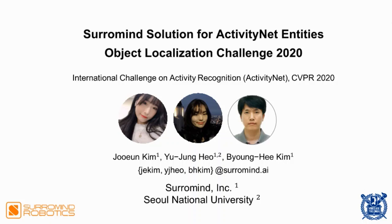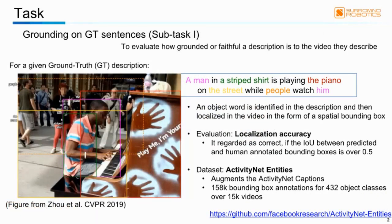Hello. I will present Team Saruman's solution for the ActivityNet Entities Object Localization Challenge 2020. This is a joint work of Jawin Kim, Yoo Chung-ha, and Byung-hee Kim. ActivityNet Entities Object Localization Challenge aims to generate faithful and explainable video descriptions. In subtask 1, from a given ground truth description for a video, noun phrases or words are identified, then localized in visual scenes sampled from the video. Here, the GT description, a man in a striped shirt is playing the piano on the street while people watch him, is depicted for a given video clip. Our task is to ground each colored phrase to the visual scene in the form of a spatial bounding box.